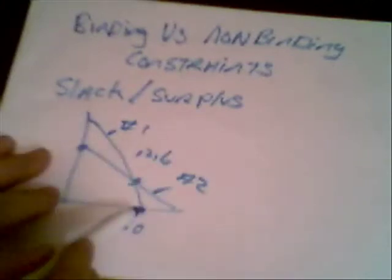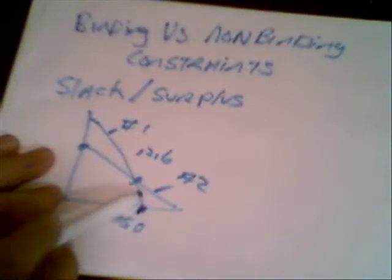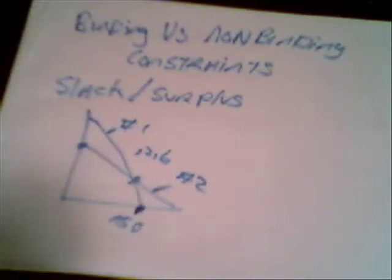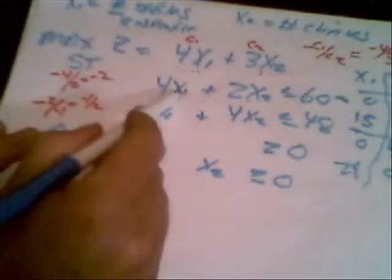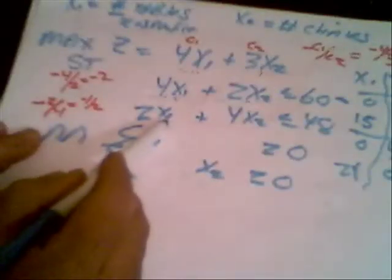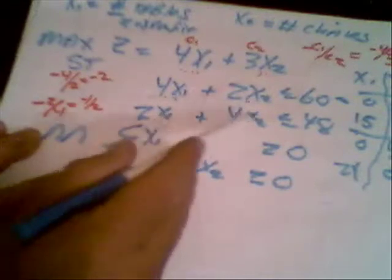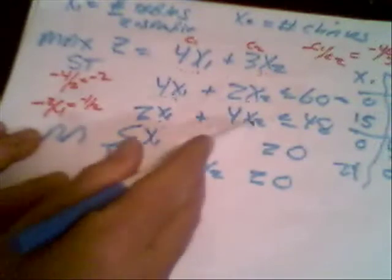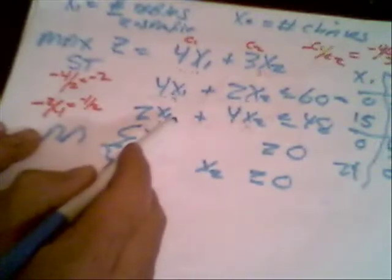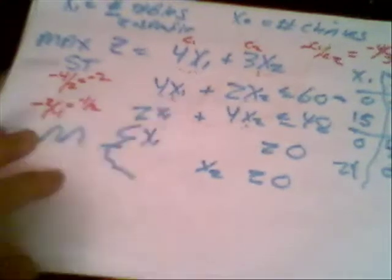Well, what's a non-binding constraint? Well, say for example that this point here had been the optimal solution, 15, 0. In that case, constraint number 1 is binding, but constraint number 2 is non-binding. Why is that? Well, if you plug 15 in for x1, you'll see that that sums to 60, and that's what we're using. But if you put 15 in the second constraint, 15 times 2 is 30, and 0 for chairs, you'll see that that left-hand side then would sum to 30, and there are 18 hours left over that we're not using. So that's a non-binding constraint.